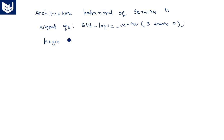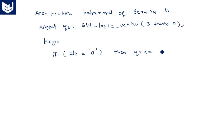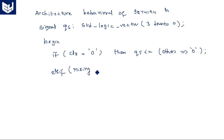In the signal representation, QS can be used in any direction as a bi-directional signal. Begin — in the process, if clear is equal to zero — clear is active low — then QS is assigned zero using 'others => 0'. Else if there is a rising edge of clock, then the operation is completely based on the selection pin.